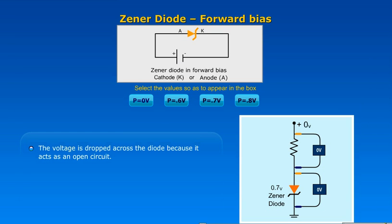When V is equal to 0, the voltage is dropped across the diode because it acts as an open circuit. When V is equal to 0.6V, the voltage is still dropped across the diode because it acts as an open circuit.